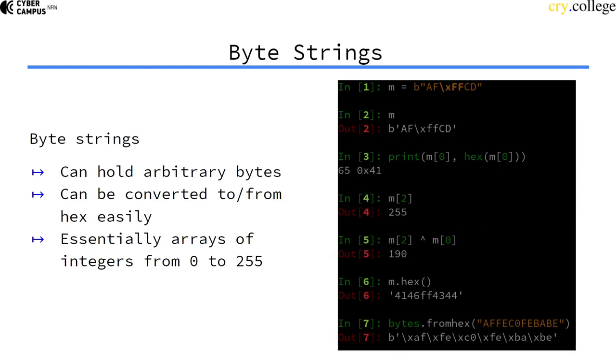So what is a byte string? You can think of a byte string as an array of byte values—an array of values between 0 and 255. Here I created a byte string. I can use ASCII printable values like A and F, and I can also use byte values. I can write them in hexadecimal by prefixing them with backslash X and then the hexadecimal value, FF for example. So I have this byte string now: A, F in ASCII, then the byte FF, and then CD.